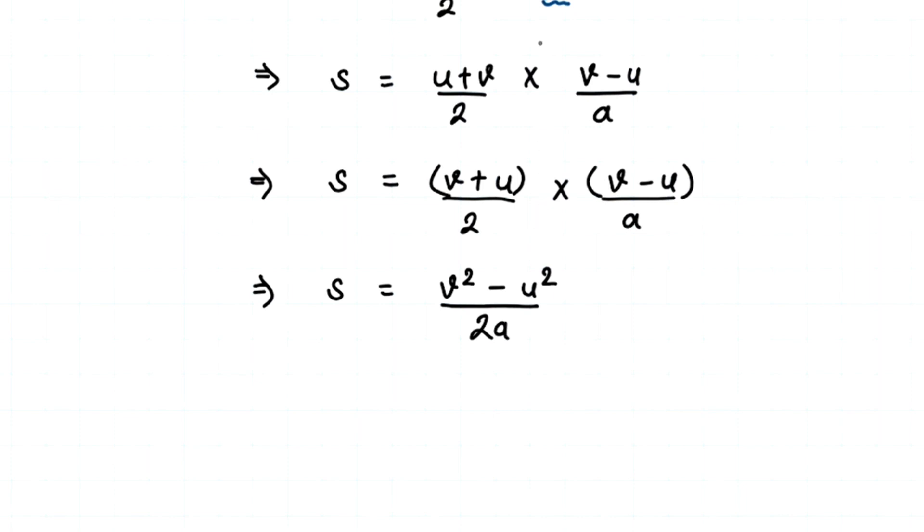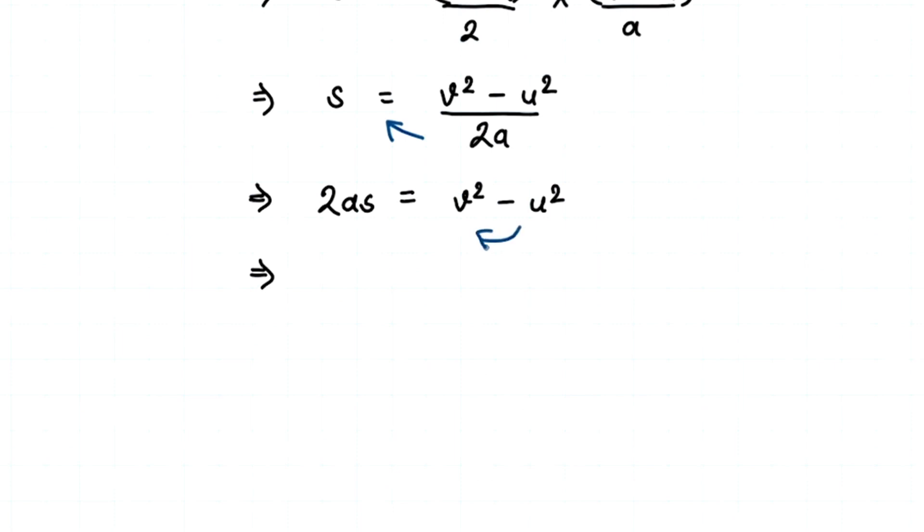Now we are going to move that 2a over, and we have 2as equals v squared minus u squared. Now if we move our minus u squared to the other side of the equals, it becomes plus u squared. We already have our 2as over here, equals v squared. And now if we flip this, we'll get our equation, which is v squared equals u squared plus 2as, and done, we have derived our equation.